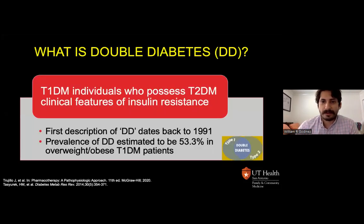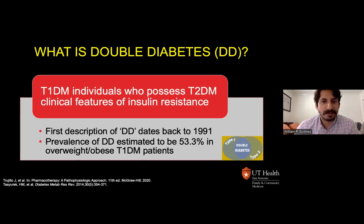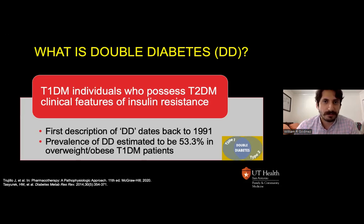There is actually another type known as double diabetes, which is used to describe a specific type 1 subgroup characterized by the coexistence of type 2 clinical features of insulin resistance. The first description dates back to 1991, when type 1 individuals were found to have at least one relative with type 2 diabetes, with worse glycemic control, high insulin requirements, and higher body weight. A recent cross-sectional study estimated that 53.3% of overweight and obese patients with type 1 had double diabetes.